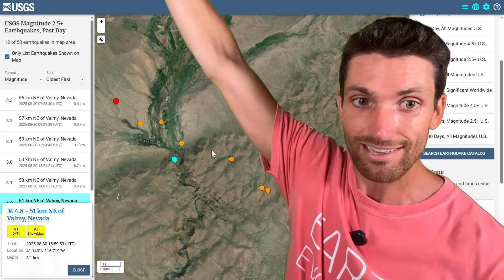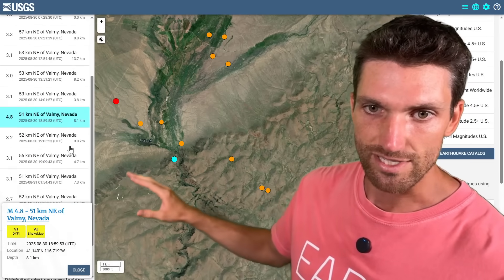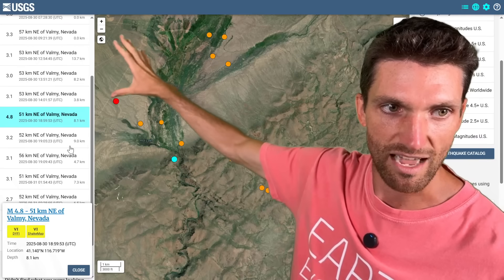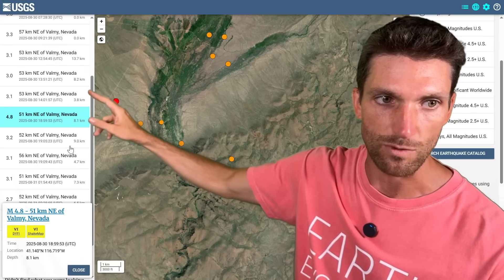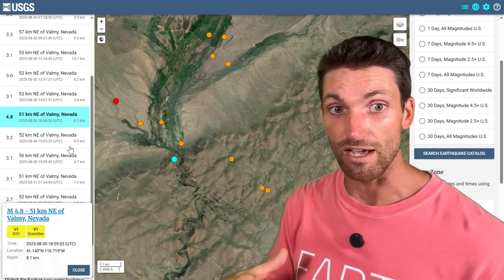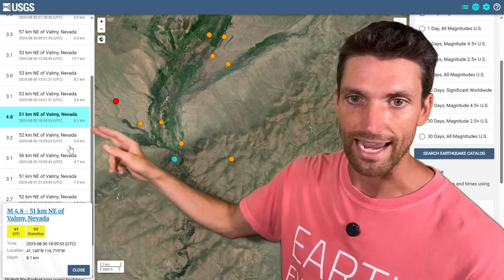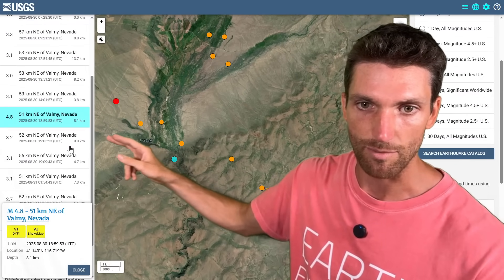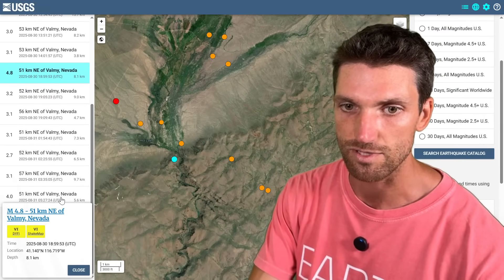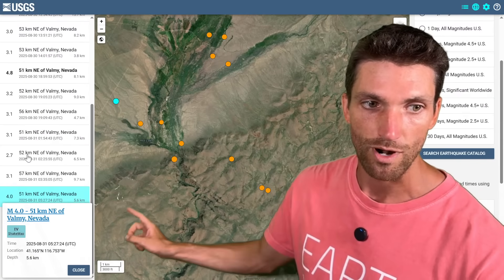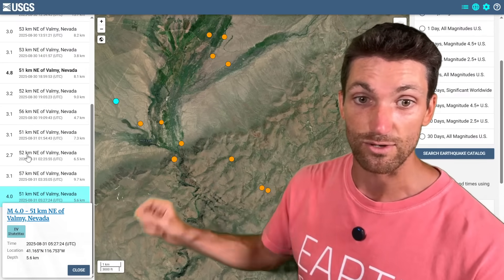And if you look at our oldest first we see that there were some other earthquakes kind of before this in the 9 a.m. UTC, 12:54, 13:51, but they were magnitude threes. But something was starting up even before that perfect alignment and then we get this 4.8 right there at a depth of 8.1 kilometers and look at the time here then we get a whole bunch of aftershocks, leading up to this most recent magnitude 4 at 5:27 a.m. universal time on the 31st of August.